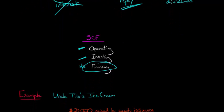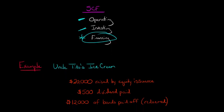So let's walk through an example. Let's say that we've got a company called Uncle Tito's Ice Cream, and Uncle Tito raises $20,000 with a stock issuance. We'll assume this is common stock, so common equity. There are no preferred shares at Uncle Tito's, just common shares. So he raises $20,000 from the stock issuance. And then Uncle Tito's pays a $500 dividend back to the common shareholders at some point during the year.